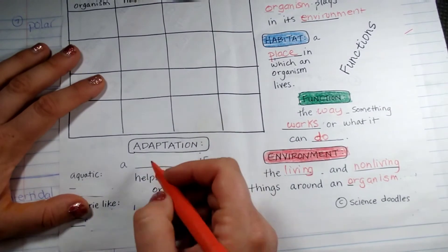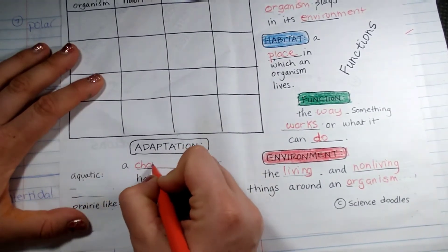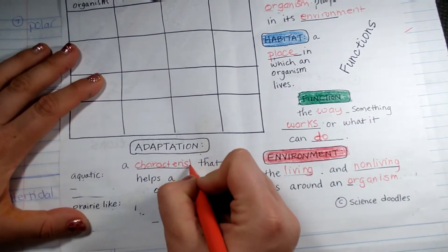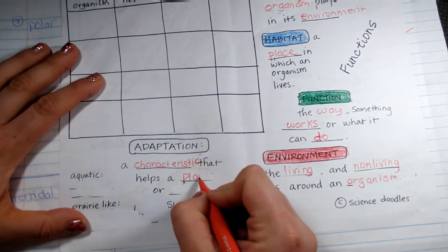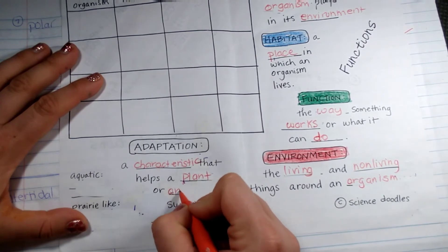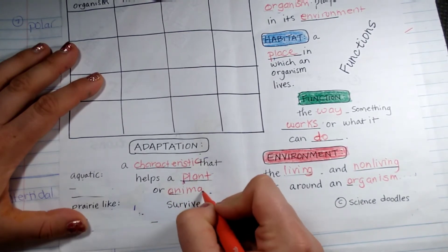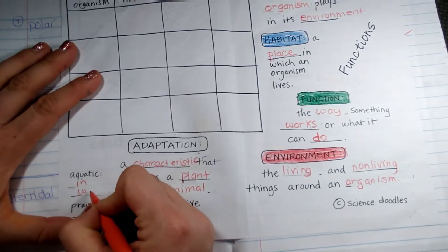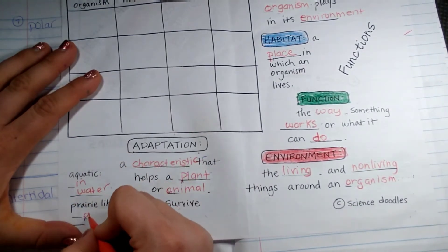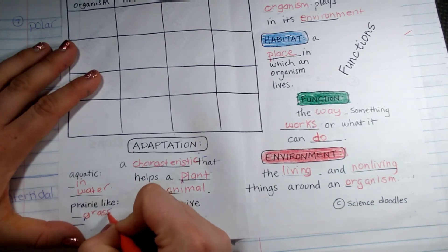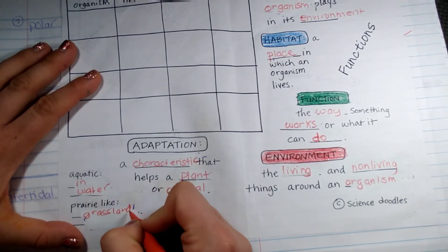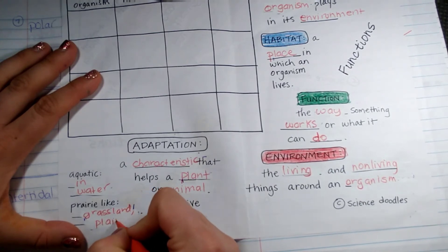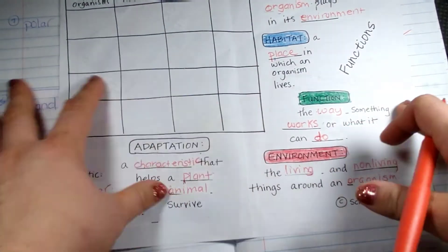And now what is an adaptation? An adaptation is a characteristic that helps a plant or animal to survive. Aquatic is in water. And a prairie is like a grassland or plains. Now we're going to talk about some examples.